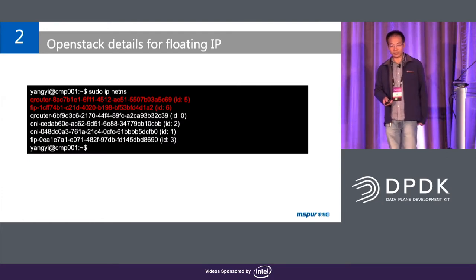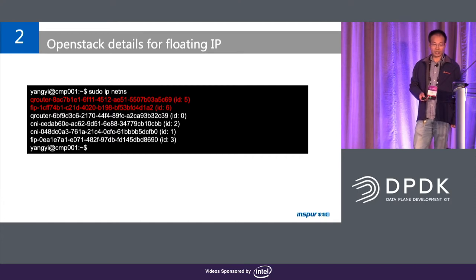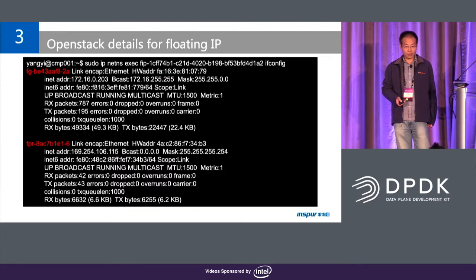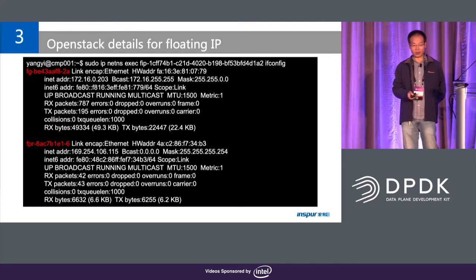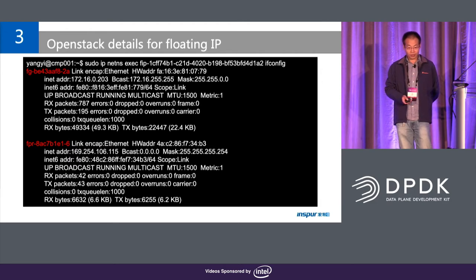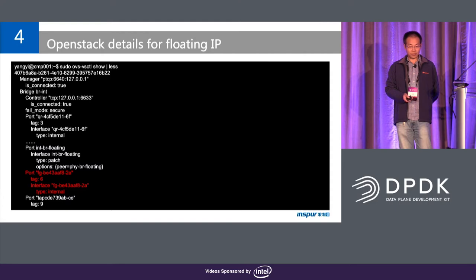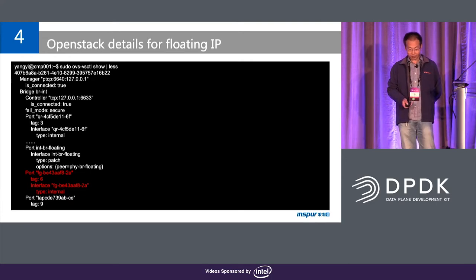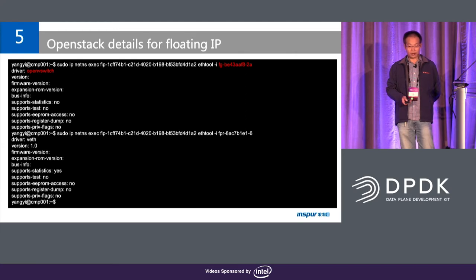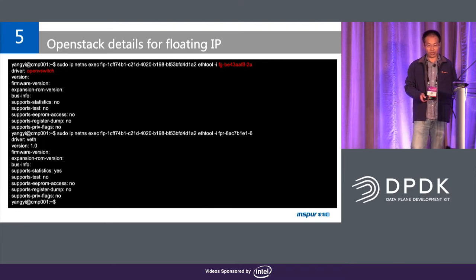Let's check the details for DHCP agent. Here you can see the network namespaces for qrouter and DHCP agent. If we check the DHCP agent interface, we can see two interfaces — one is for the DHCP agent address and another is for internal use. The first client interface is the internal part; actually it's a TAP device. You can see it's open vSwitch, but actually it's a TAP.